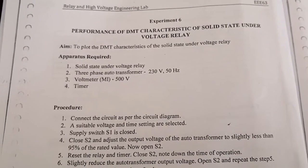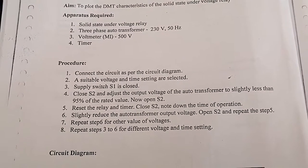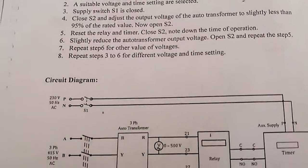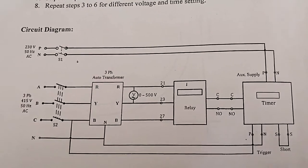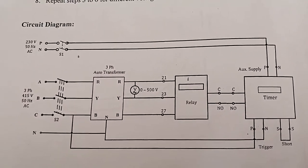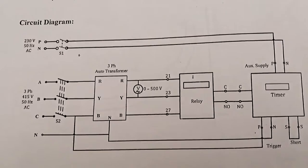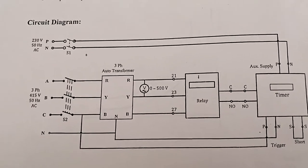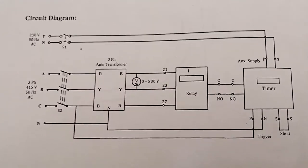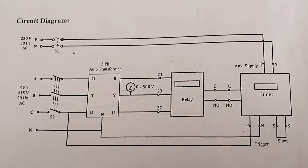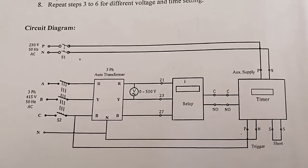You can see the apparatus used and check the procedure step by step. The main heart of this experiment is the circuit diagram. In the circuit diagram you can see two switches S1 and S2. S2 is connected to a 3-phase auto transformer. The 3-phase auto transformer is connected to the relay through terminals 21, 23, and 27. The relay is connected to the timer, and separately the timer has an auxiliary supply of phase and neutral. Triggering is given to the timer with P and N, and S and S is shorted.